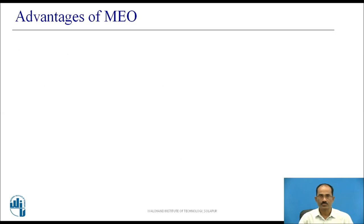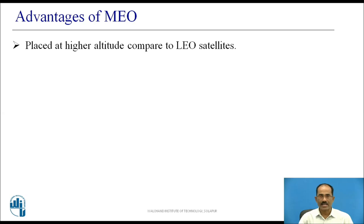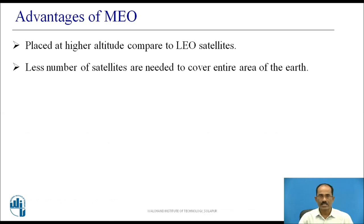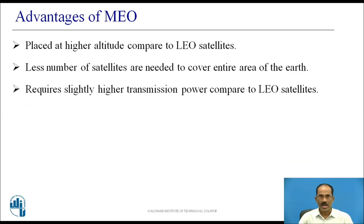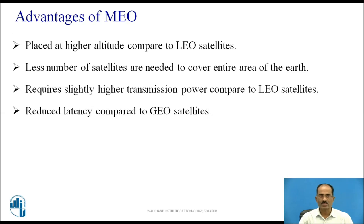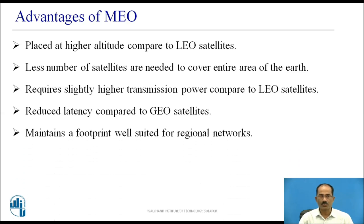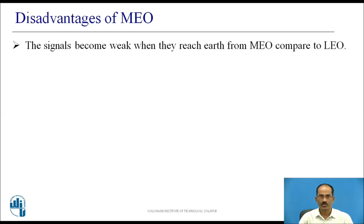Advantages of MEO: MEO satellites are placed at higher altitude compared to LEO satellites. Less number of MEO satellites are needed to cover the entire area of the earth. MEO satellites require slightly higher transmission power compared to LEO satellites. MEO requires reduced latency compared to GEO satellites, and MEO maintains a footprint well suited for regional networks. Disadvantages of MEO: The signals become weak when they reach earth from MEO compared to LEO, due to the higher altitude of MEO.